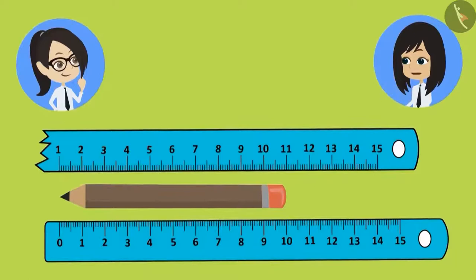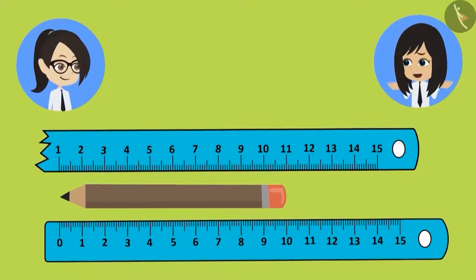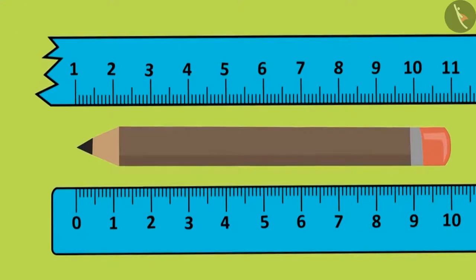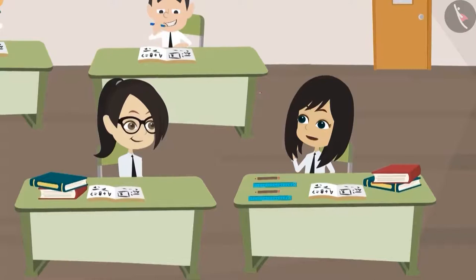I will start counting again. 1, wait. What happened? Look. The correct scale has a 0 written at the starting point, while measuring with the broken scale, we are starting from 1. This means whenever we measure using a broken scale, we will still start from 0.